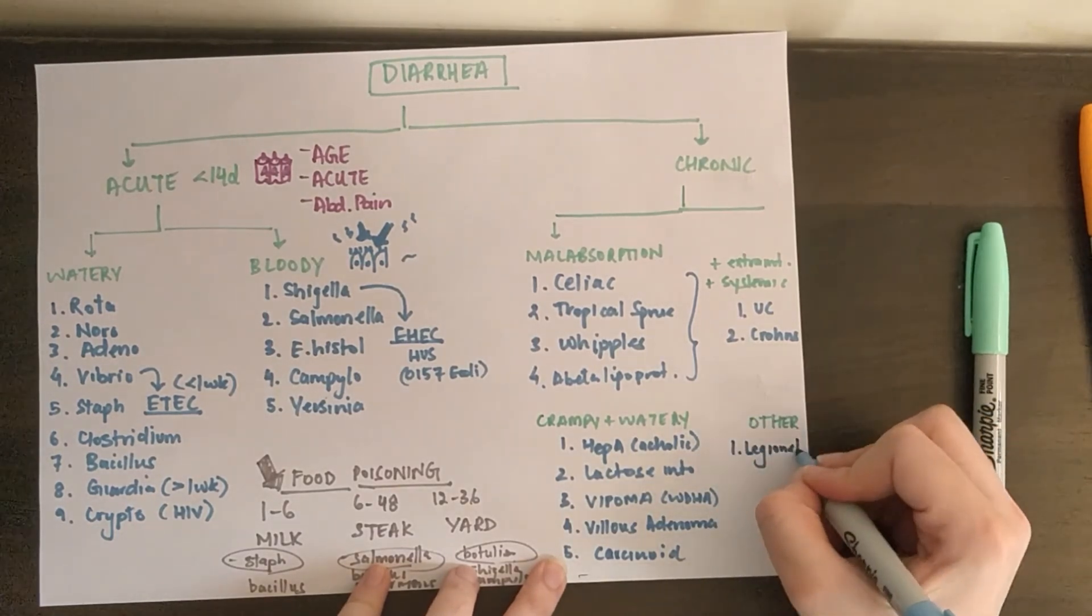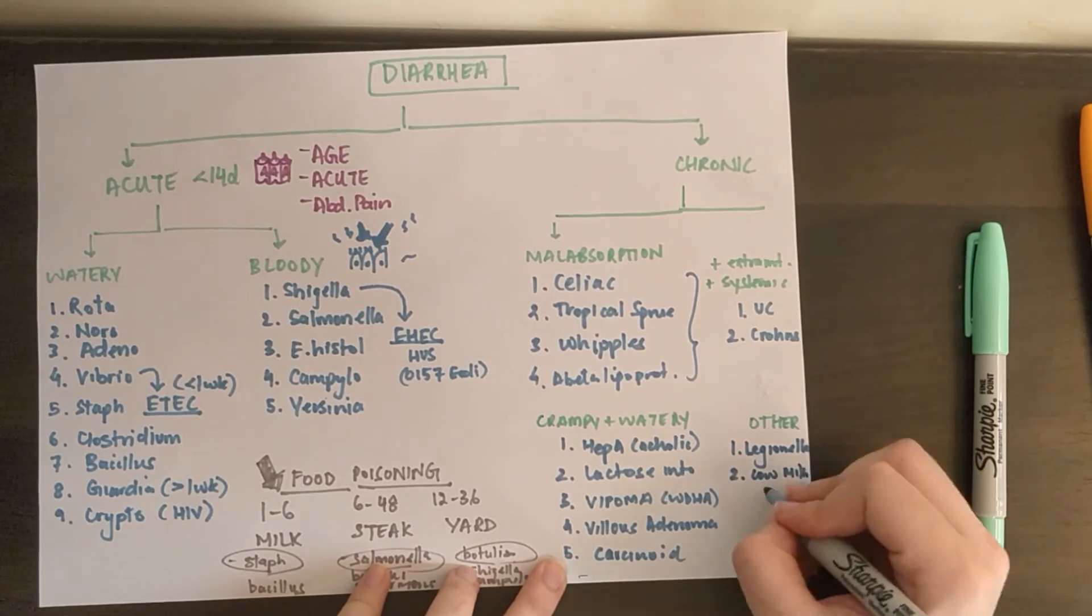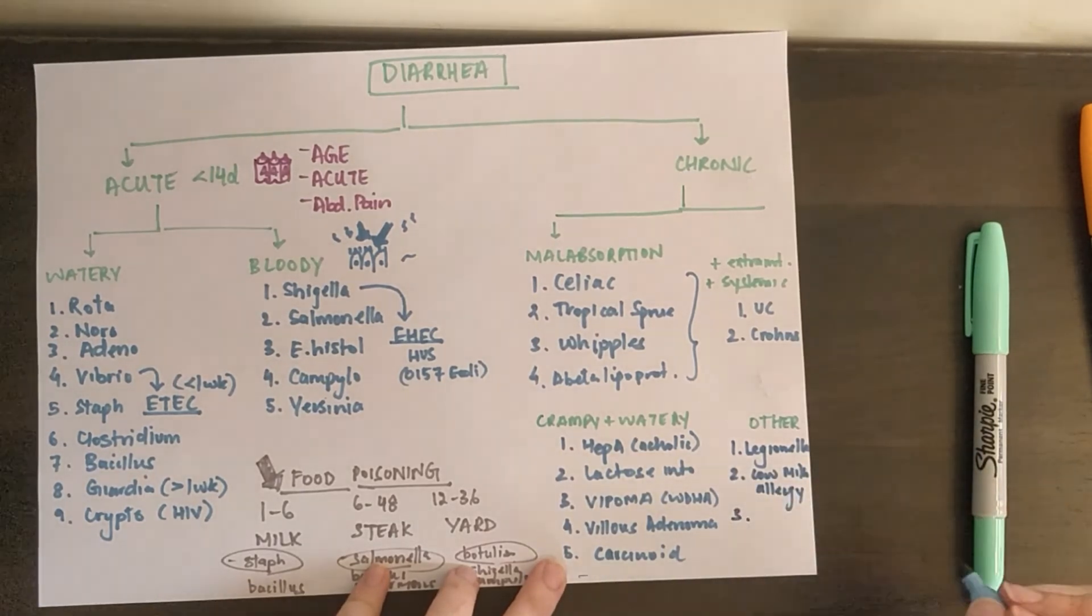Lastly is the random stuff. So diarrhea with pneumonia, Legionella, other random things like cow milk allergy, and also necrotizing enterocolitis.